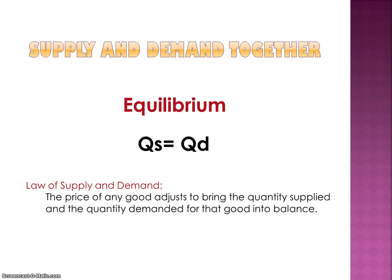The law of supply and demand tells us that the price of any good adjusts to bring the quantity supplied and the quantity demanded for that good into balance. Markets will move towards their equilibrium as long as there is nothing stopping the market from doing so, like a government regulation. Assume for now that there are no regulations blocking a market, and a market left to its own devices will move towards and end up at its equilibrium where the two curves cross.